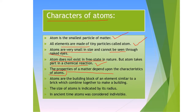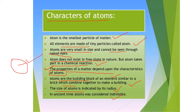The properties of matter depend upon the characteristics of atoms — whatever type of atom is present determines the properties of matter. Atoms are the building blocks of elements, similar to bricks combining to make a building. The size of an atom is indicated by its radius. In ancient times, atoms were considered to be indivisible — they could not be further divided and were considered to be the smallest particle of matter.